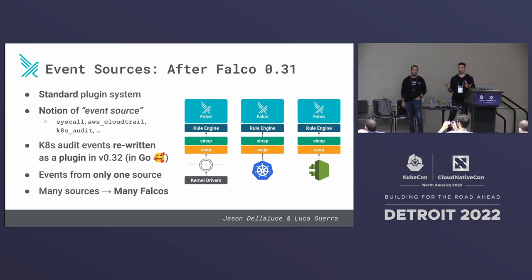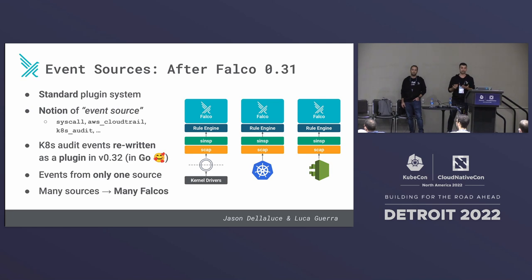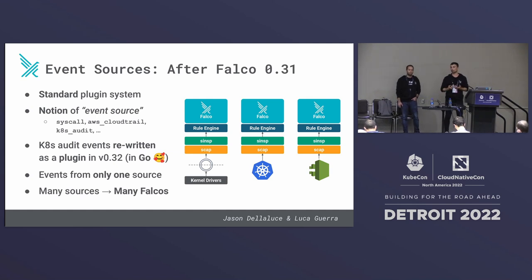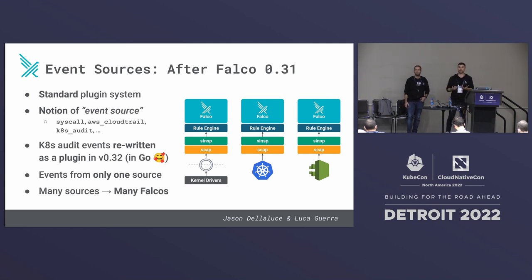Which is great — much more maintainable and easy to work with — but there were some differences from before. The biggest one is that initially, with the plugin system, Falco was only able to run one event source per configuration. So for example, if you wanted to do both system call collection and AWS CloudTrail events, you had to deploy two different instances, which was not very handy, and many community members complained because it wasn't much different from what we had before.